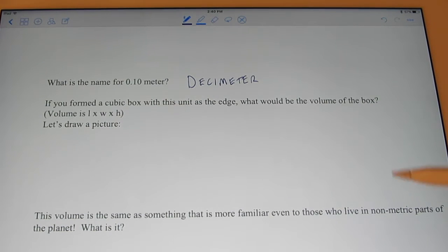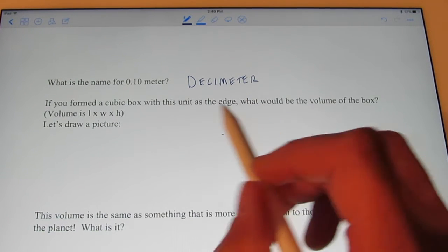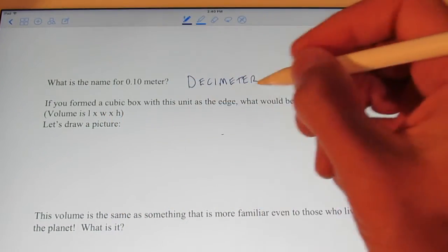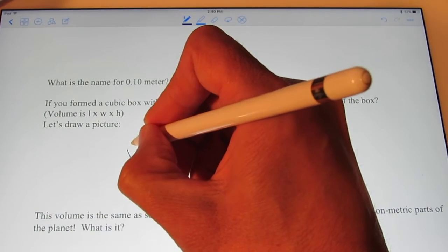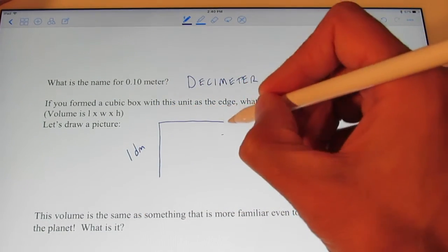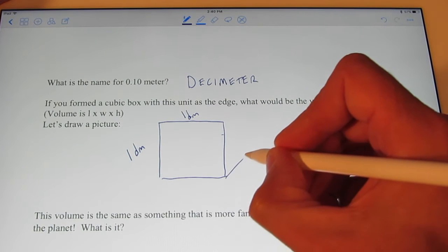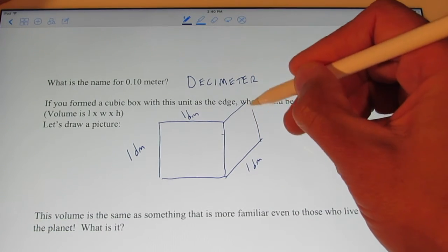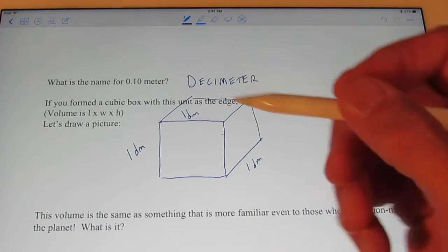Alright, so let's say we formed a cube, a cubic box, with this unit as its edge. What would be the volume of that box? Remember, volume is the length, width, and height, or if it's a cubic box, it would be the length cubed. So, let's try to draw a picture of that.